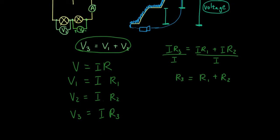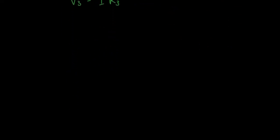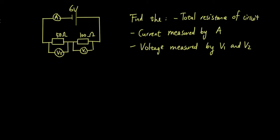Let's do a practice problem to summarize what we have learned. I've drawn a circuit with two resistors and an ammeter which measures the current, and voltmeters measuring the potential difference across each resistor. Find the total resistance of the circuit, the current measured by the ammeter, and the voltage measured by each voltmeter. Have a go and come back when you are done.